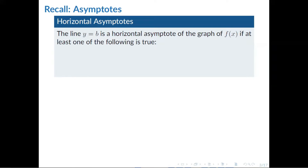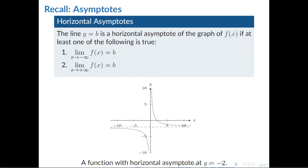For horizontal asymptotes of the line y equals b, we need at least one of the following to be true: the limit of f(x) as x approaches negative infinity equals b, or the limit of f(x) as x approaches positive infinity equals b. Here is a function with a horizontal asymptote at y equals negative 2 — as you approach negative infinity and as you approach positive infinity, the function slowly approaches negative 2.